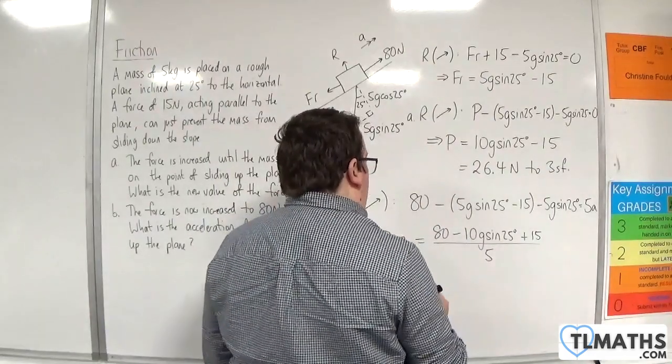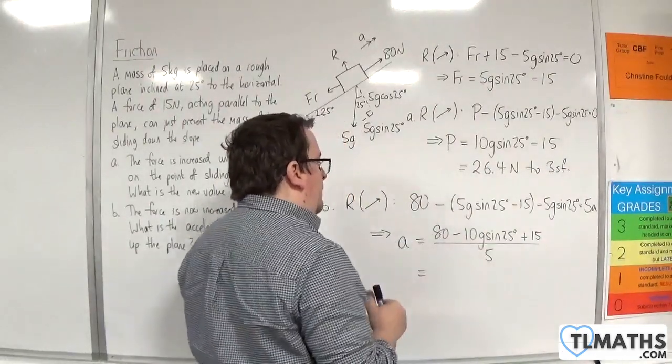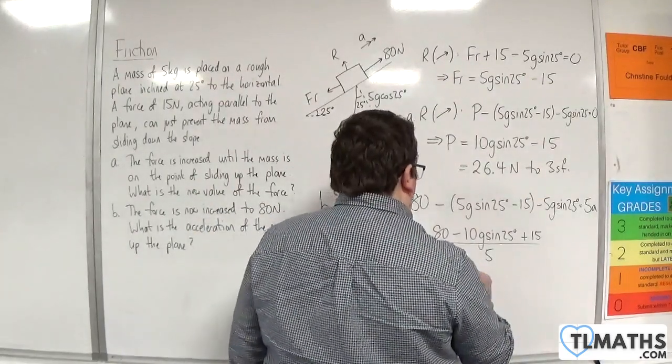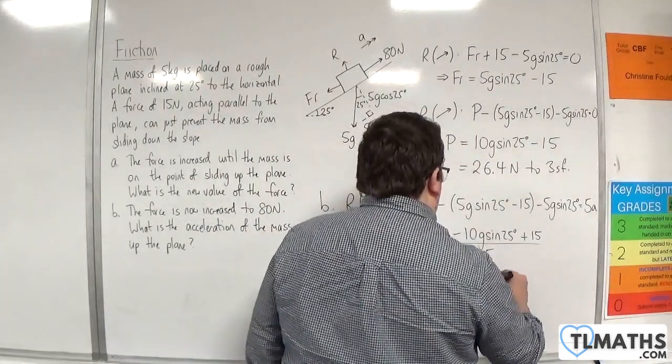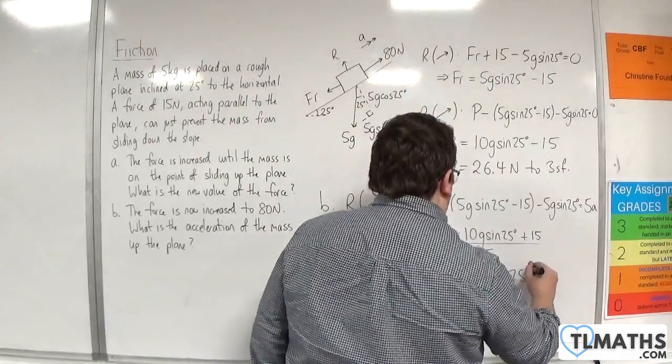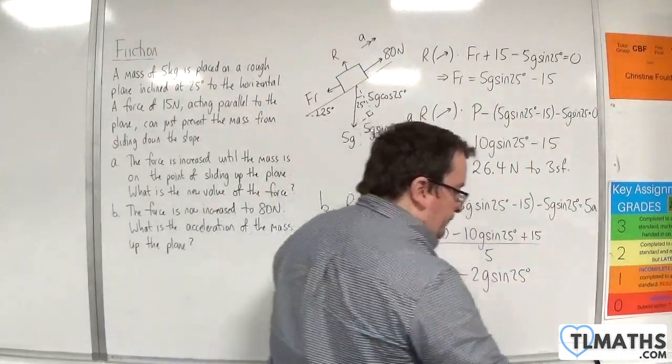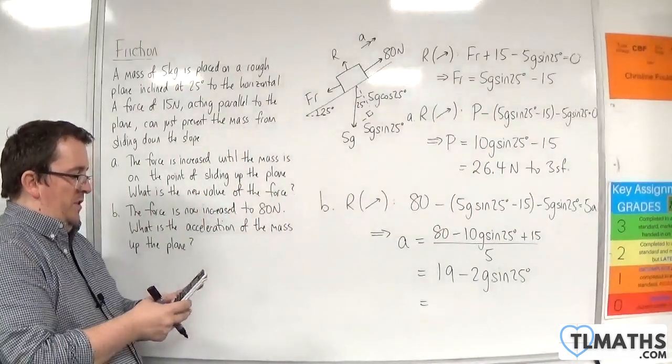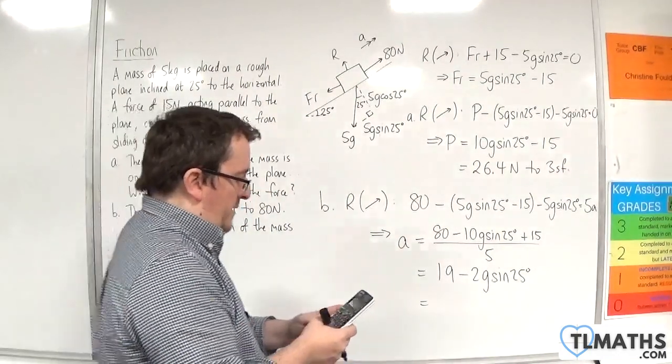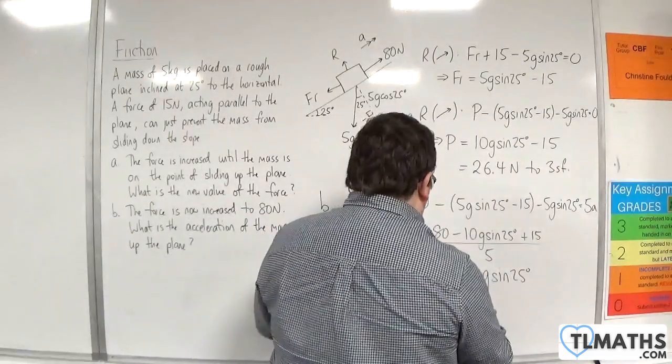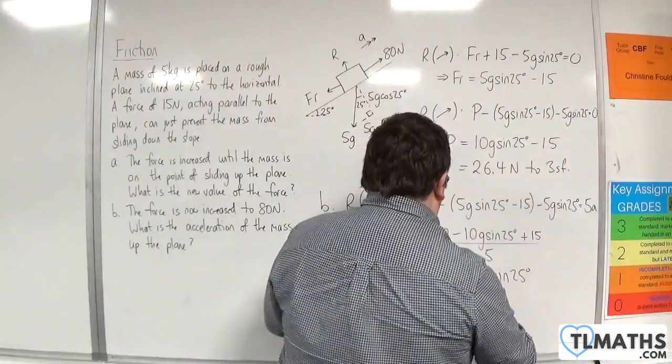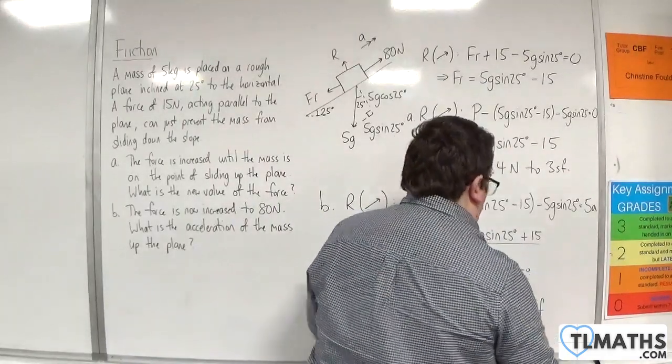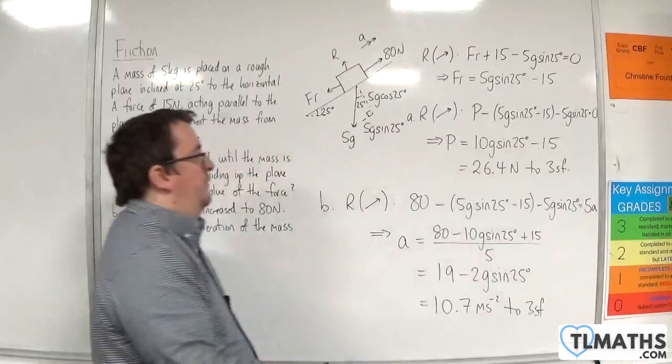So this would be, so 80 plus 15 is 95, divided by 5 is 19, take away 2g sin of 25. So 19 take away 2 times 9.8 times sin of 25 gets us 10.7 metres per second per second to 3 significant figures.